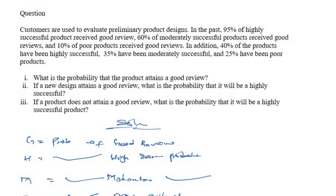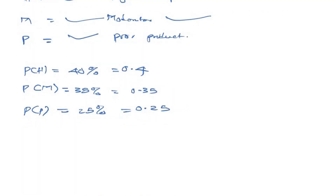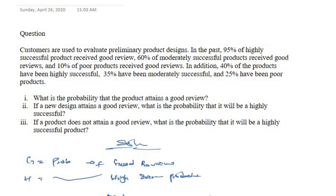Going back to the question, 95% of highly successful products received a good review. This is a conditional probability: the probability of a good review given highly successful products, P(G|H), is equal to 95%, which is 0.95.